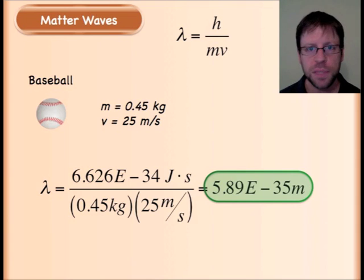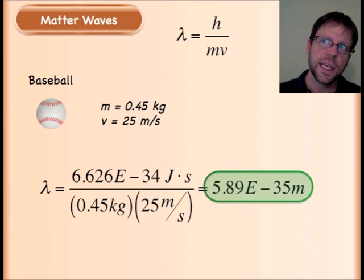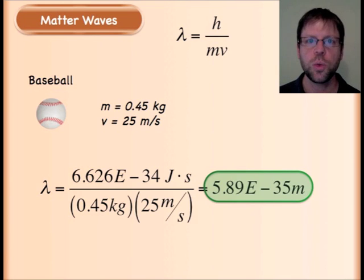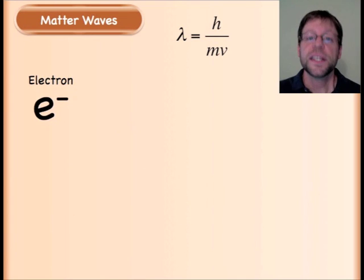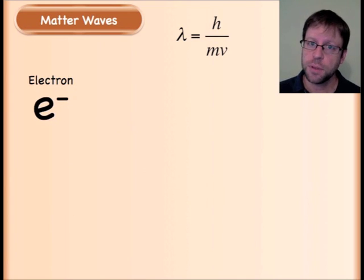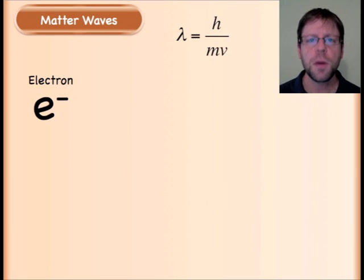And I happen to get 5.89 E-35 meters. This is an incredibly small number, make sure you take that in. An atom for example, that's going to be something that's on the E to the -11, -12, -11 probably meters. And so we're talking way smaller than an atom.